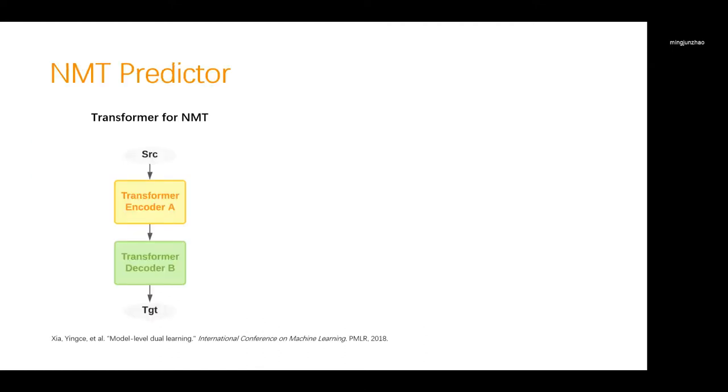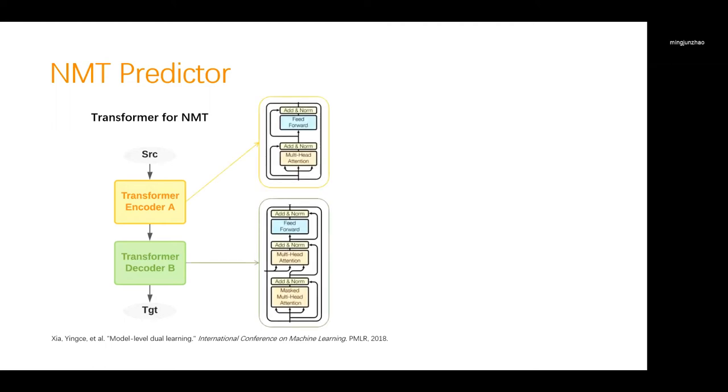Transformer is currently the state-of-the-art model for NMT, which consists of an encoder that maps source sentences to the hidden representation, and a decoder that outputs the target translation based on the encoder output. The encoder and decoder of Transformer consists of several stacked blocks. Each block is composed of a multi-headed self-attention layer, an optional multi-attention layer that's only present in the decoder, and a feed-forward layer. Between two consecutive layers, a residual connection and layer normalization operation is performed.